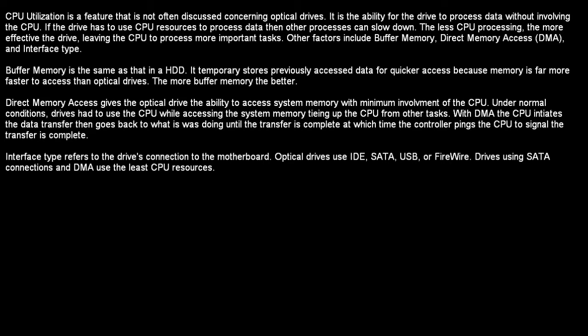Buffer memory is the same as in a hard drive. It temporarily stores previously accessed data for quicker access, because memory is far faster to access than the optical drive. The more buffer memory, the better. Direct memory access gives the optical drive the ability to access system memory with minimum involvement of the CPU. Under normal conditions, drives had to use the CPU while processing system memory, tying it up from other tasks. With DMA, the CPU initiates the data transfer, then goes back to what it was doing until the transfer is complete, at which time the controller pings the CPU to signal the file transfer was complete.